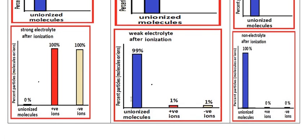This graph represents the weak electrolyte. Before ionization, the molecules are present as 100% unionized. After ionization, most of the molecules — 99% for example — remain as unionized molecules in the solution, while only about 1% of the molecules are dissociated into positive and negative ions. This represents very small dissociation, which is the situation in the case of weak electrolytes.